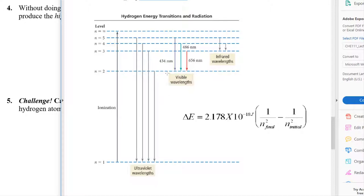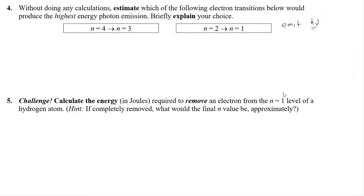Going from two to one gives a big energy gap — that's ultraviolet, a high-energy photon with high frequency and small wavelength. Going from four to three is really tiny — that actually falls in the infrared, on the other side of the visible spectrum: lower frequencies, longer wavelengths. I'll let you fill in the details on that one.